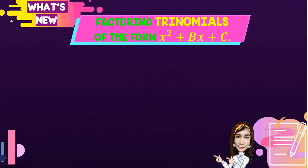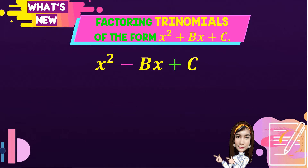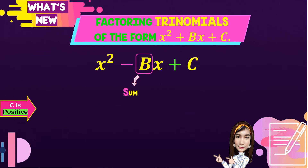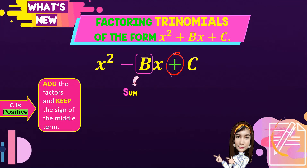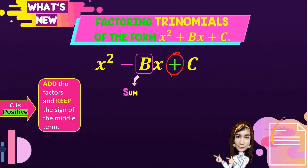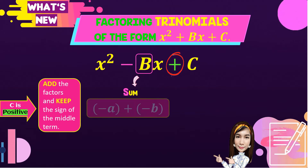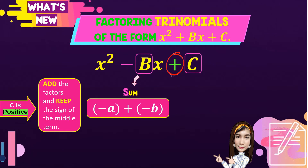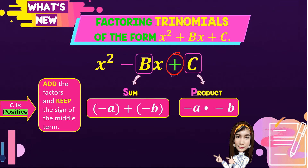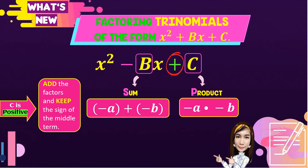Next, given x squared minus bx plus c, b is the sum. When c is positive, we add the factors and keep the sign of the middle term. As you observe, negative is the middle term, so both factors are negative — negative a plus negative b. For the product, we have negative a times negative b, and we get positive c.